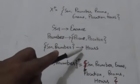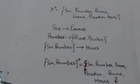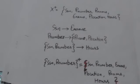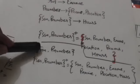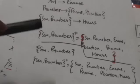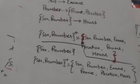For the next functional dependency, attributes SSN and P_number are present in X+, so we add attribute Hours into X+, which is already present. Since after going through all functional dependencies in F, X+ has not changed, we stop. The closure of this set of attributes under F is this set. Thank you very much.